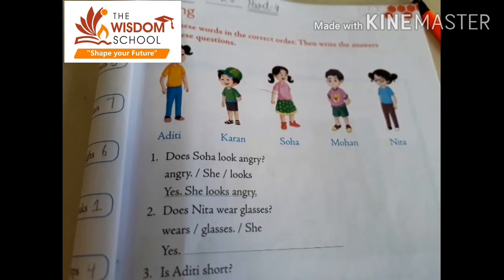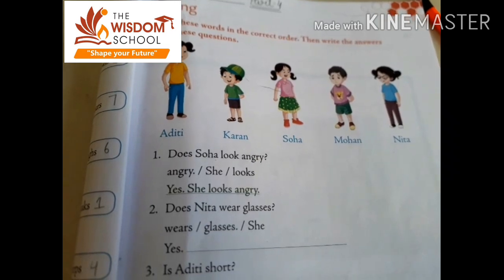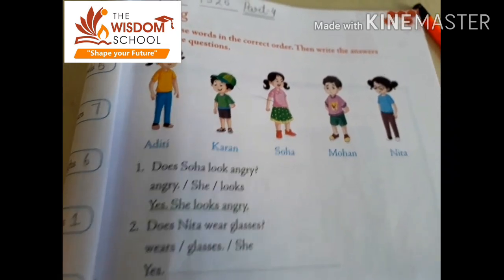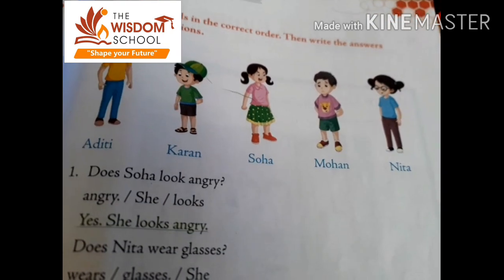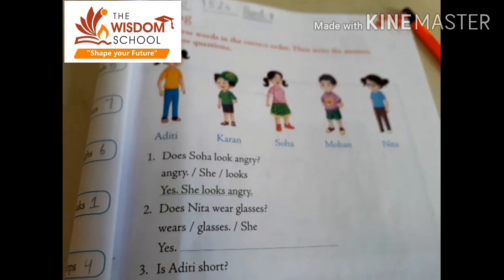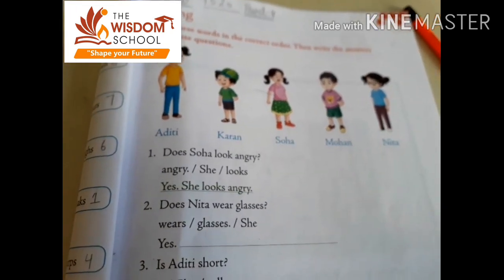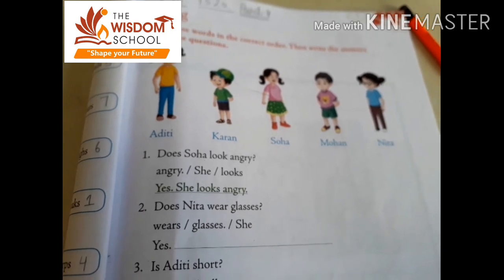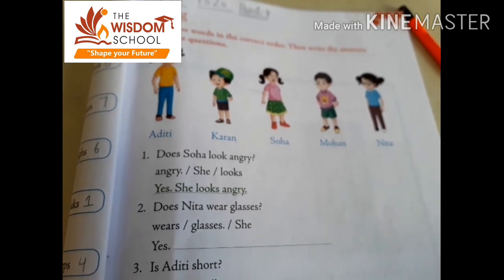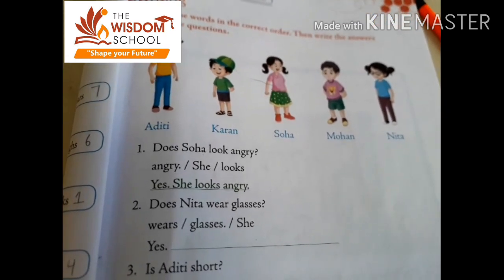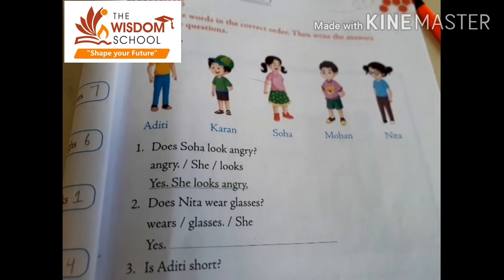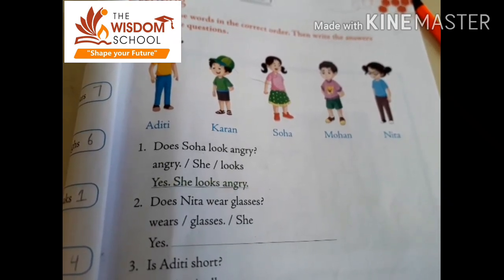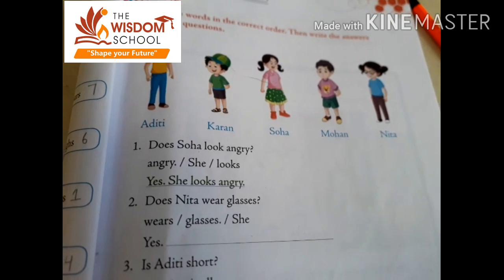Now come to the second sentence. Does Nita wear glasses? Kya Nita ne glasses pahane huye hain? Dekhiye — pahane huye hain na? Yes. And uske baad kya aega sabse pehle? Subject. Humara subject kya hai? She. Uske baad verb. Humari verb kya hai? Wears. And then object. Object kya hai? Glasses.